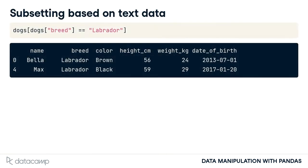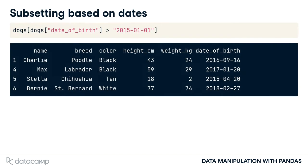We can also subset rows based on text data. Here we use the double equal sign in the logical condition to filter the dogs that are Labradors. We can also subset based on dates. Here we filter all the dogs born before 2015. Notice that the dates are in quotes and are written as year, then month, then day — this is the international standard date format.